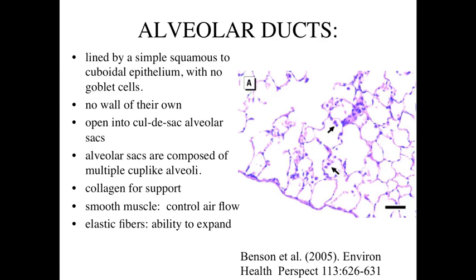Going from the respiratory bronchioles into the alveolar ducts, we see lining primarily by a simple squamous epithelium with occasional cuboidal cells scattered within it — no goblet cells. The alveolar ducts are a structure with no distinct wall of their own; they function like a vestibule opening up into cul-de-sac-like alveolar sacs, which then open into multiple cup-like alveoli. All of these structures — alveolar ducts, alveolar sacs, and alveoli — are lined by these simple squamous epithelial cells, with fine collagen for support and a little smooth muscle to regulate airflow.